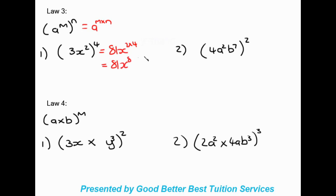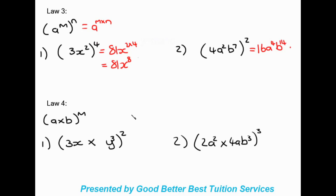Another example: four a squared b to the power of seven, all to the power of two. The coefficient four squared gives 16. Then a: two times two gives four. And b: seven times two gives 14. So the final answer is 16 a to the power of four, b to the power of 14.